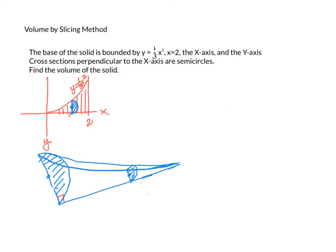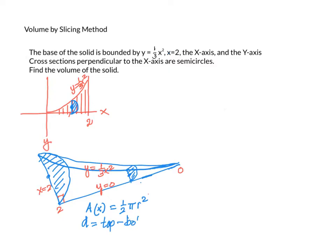The volume of the solid is found by adding all the semicircles from 0 to 2. The vertical line here is x equals 2, and the function below is y equals 0. The function above is y equals 1/3 x squared. The area of the semicircle equals 1/2 π r squared. The radius is half of the diameter, so here is the radius of the circle.